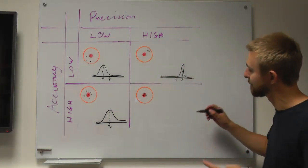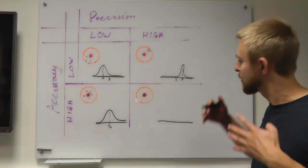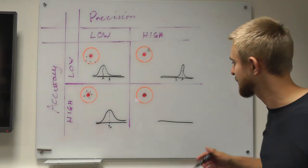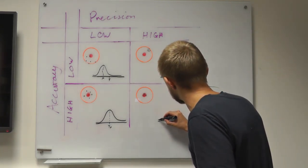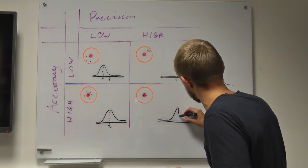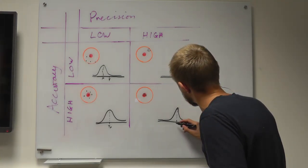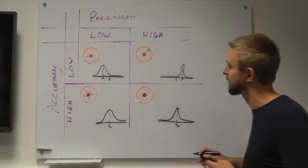So you get something a bit like this. Okay? And finally, the last graph is going to be where not only are the mean and the target aligned, but also you've got a very tight grouping of shots. So your distribution is going to look something like this, with your mean and your target on the same spot.